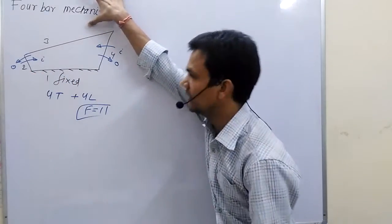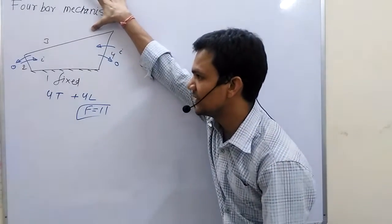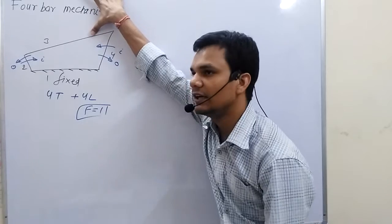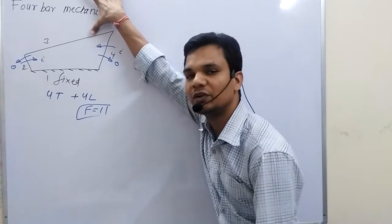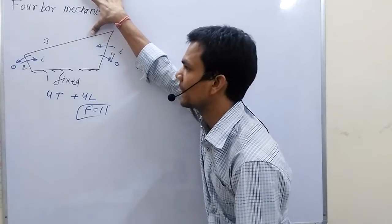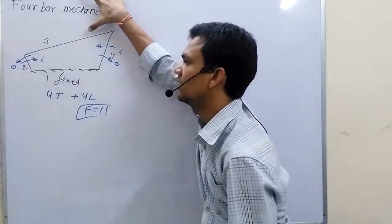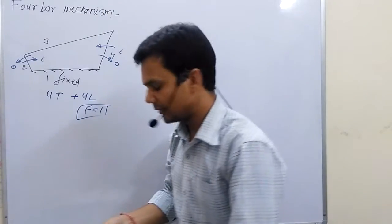And the coupler, adjacent to fix, is called coupler. It is in the best position because it cannot control input output link motion, and it can only join the input and output link mechanism.